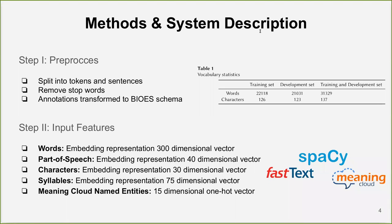The second step is to prepare the input features. Words: a 300-dimensional embedding representation based on pre-trained word embeddings generated from Spanish medical corpora using fastText.